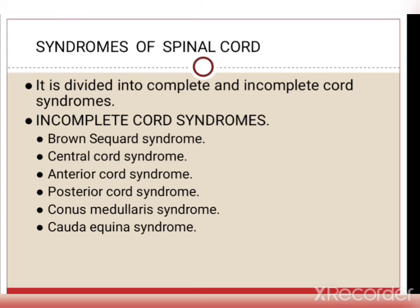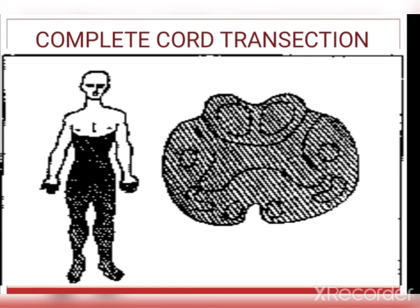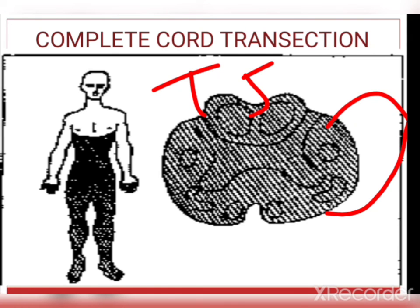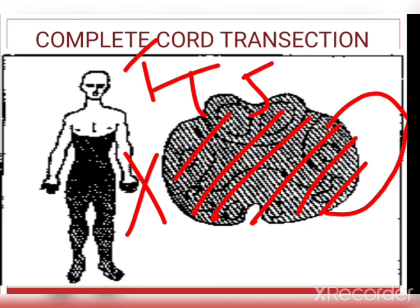Other syndromes of the spinal cord: complete cord transection means complete injury to the spinal cord at a particular level — all tracts at that level are damaged. For example, injury at T5 means complete paralysis below T5 while above T5 is normal. Causes include trauma, metastatic carcinoma and autoimmune disorders. All ascending tracts below and descending tracts above the level are interrupted, affecting motor, sensory and autonomic functions.